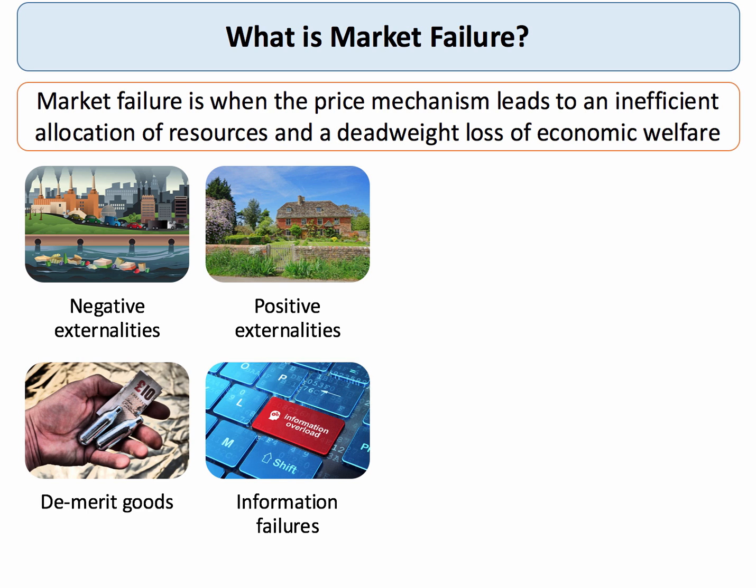Demerit goods are another example of market failure, partly as a result of negative externalities and partly as a result of information failures — consumers may over-consume demerit goods. Information gaps are also an important cause of market failure, leading people perhaps to make suboptimal choices.